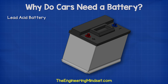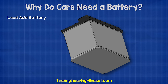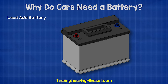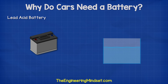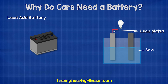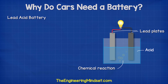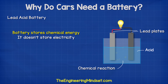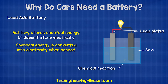The 12-volt car battery looks something like this. This is a lead-acid battery. We call it a lead-acid battery because inside the unit are lead plates, which are submerged into an acid. This creates a chemical reaction, which releases energy and provides us with a voltage and current. The battery is therefore storing energy in the form of chemical energy — it does not store electricity. This chemical energy is converted into electrical energy whenever we need it.